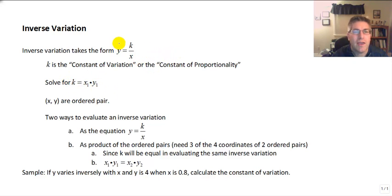We can solve for k from y equals k over x. We want to get x out of the denominator, so multiply both sides by x. The x's cancel. We've isolated k and k equals x times y. So our constant of proportionality in an inverse variation is the product of the coordinates of the ordered pairs.